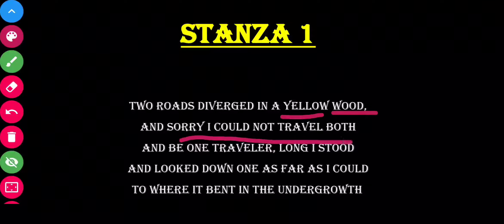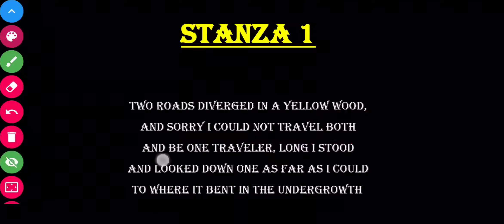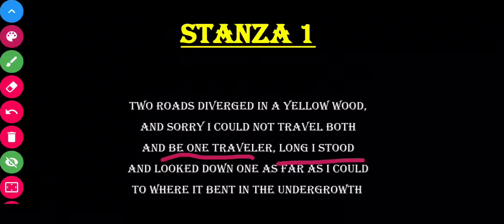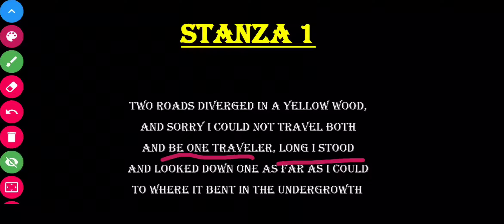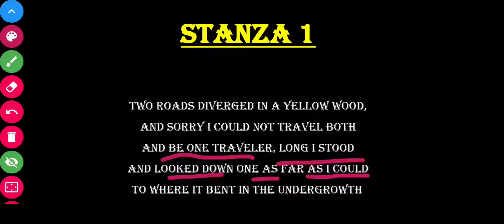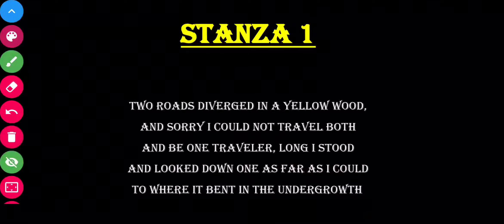The poet says: 'Sorry, I could not travel both.' I have to choose one — be one traveler. I was standing there for a long time, looking at those two roads. 'And looked down as far as I could' — the poet was looking for the path, looking as far as he could see where the path went.